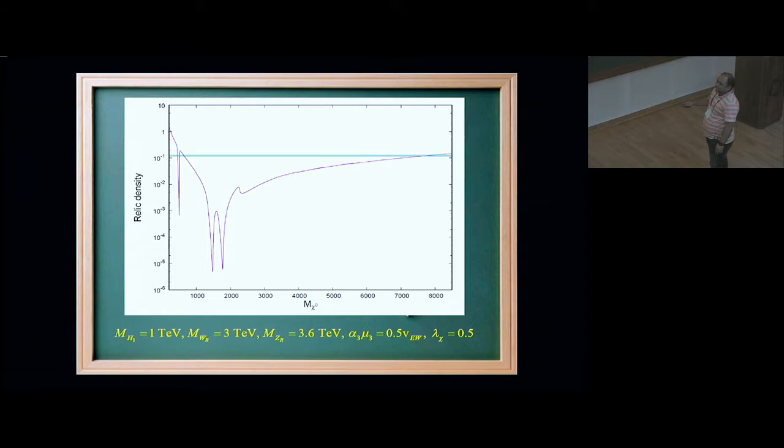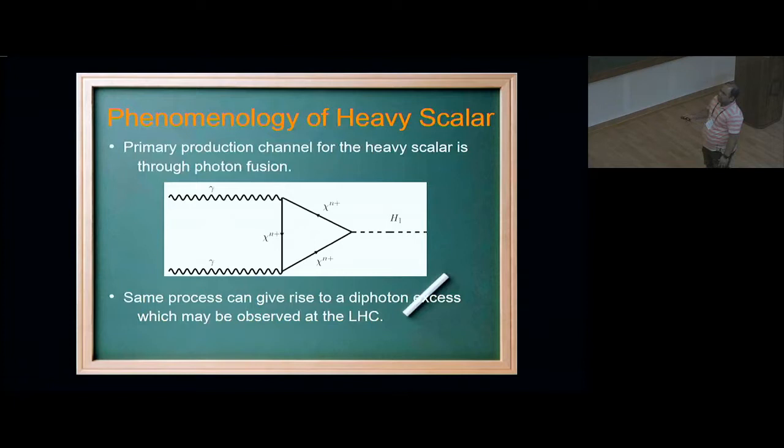This is my relic density plot as a function of the dark matter mass, and this is the 0.12 line, which is the observed relic density. We see there are two or three points at small mass of chi zero which satisfy my relic density bound, and there are three kinks here. I took this heavy singlet mass to be one TeV. So this first kink is at 500 GeV, which is half of this heavy singlet mass. This corresponds to the annihilation of the dark matter through H1. This one is co-annihilation of dark matter with chi plus through WR, and this one is dark matter annihilation through ZR.